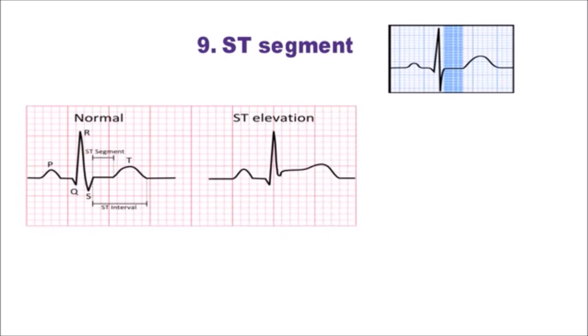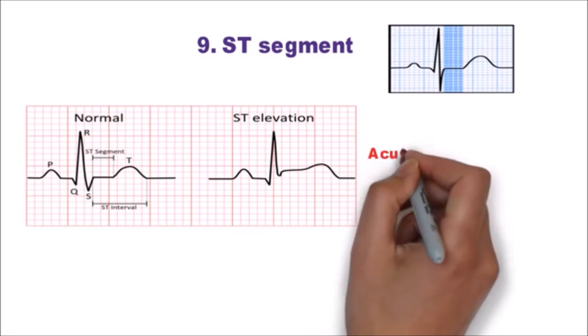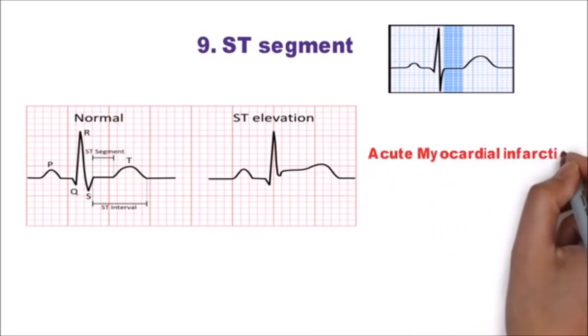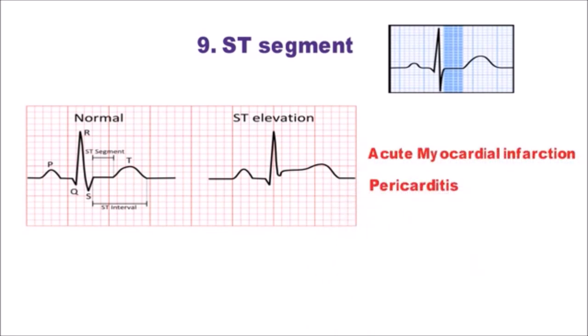Step 9, ST segment. It is the flat isoelectric section of ECG between the end of s-wave, i.e. the J-point, and beginning of t-wave. As in this ECG you can see ST elevation which could be commonly due to acute myocardial infarction or in pericarditis.